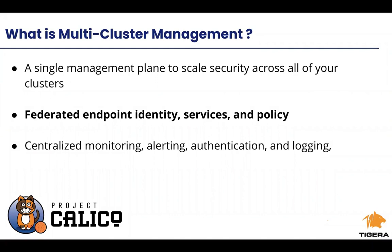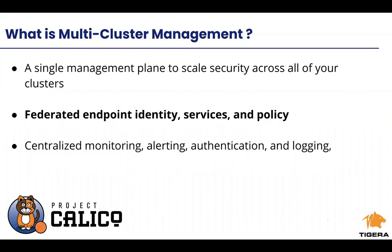In the context of multiple clusters — one, two, three, four, or five different Kubernetes clusters — we can actually extend that endpoint identity not just within a single cluster but across all clusters. The labels applied to a workload in cluster A will be known by clusters B, C, D, E, and F. This allows you to apply policy across clusters, so if you have workloads that communicate across Kubernetes clusters, you can use the same label-based policy that you would for a single cluster.